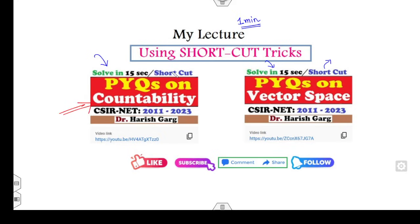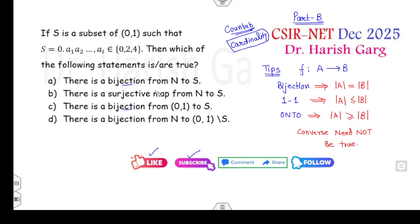F is onto implies cardinality of A is greater than or equal to cardinality of B. F is one-one implies cardinality of A is less than or equal to cardinality of B. But make sure converse need not be true. For more details you can watch my first lecture, that is PYQ on countability. I am very sure your reaction will change from uff to wow once you watch this lecture.